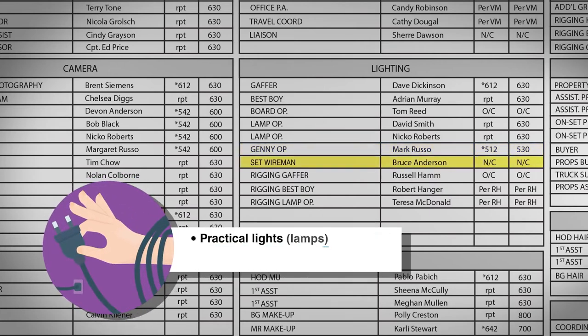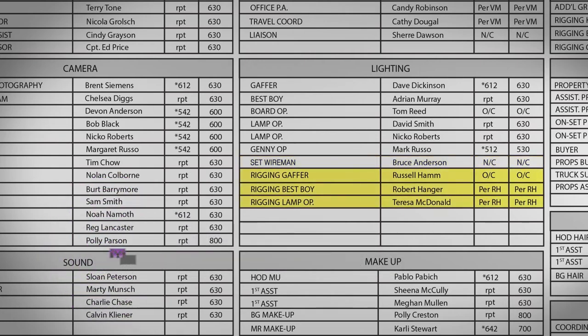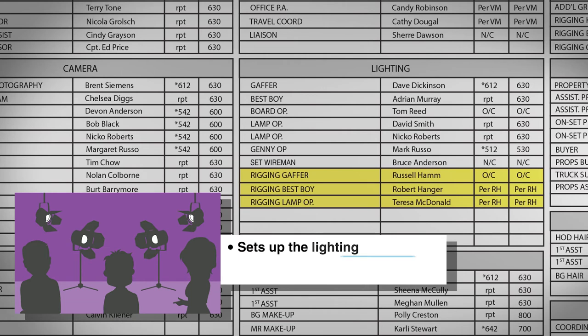The set wireman is in charge of wiring all practical lights in front of camera such as lamps. They also pre-wire scenery, sets, and props, and work closely with the gaffer and GENIOP. The rigging crew are in charge of setting up the lighting in advance of the main unit's arrival. For example, they may set up lights in a studio for filming the next day or set up lighting during the day for a night shoot. This team works closely with the main unit's director of photography and gaffer.